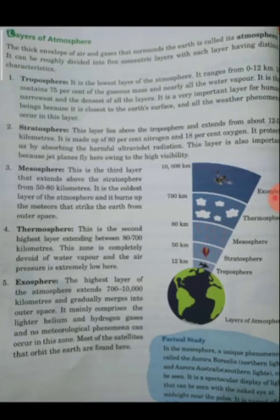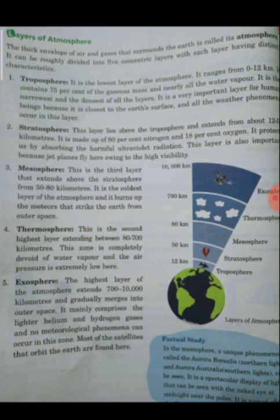We also did the layers of atmosphere - the five major layers. Please see the diagram on page 76. The first layer is the troposphere, up to 12 kilometers. The second is the stratosphere, up to 50 kilometers. The third is the mesosphere, up to 80 kilometers. The fourth is the thermosphere, up to 700 kilometers. And the fifth is the exosphere, up to 10,000 kilometers.